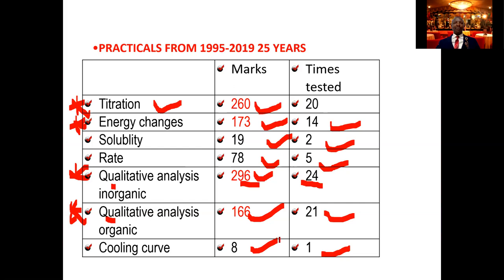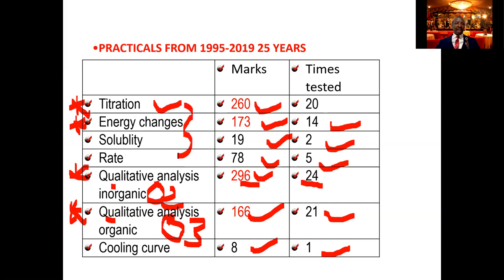It is very important, as you prepare, to remember that the exam for paper three will only be set from around six areas. The qualitative inorganic area is where you get question two. Question two is set from there. Organic qualitative analysis is where you normally get question three. And all these ones — titration, energy changes, solubility, rate, and cooling curve — are where you will normally get question one. Question one is usually set from this particular area of physical chemistry. So now you know where the exam will come from.